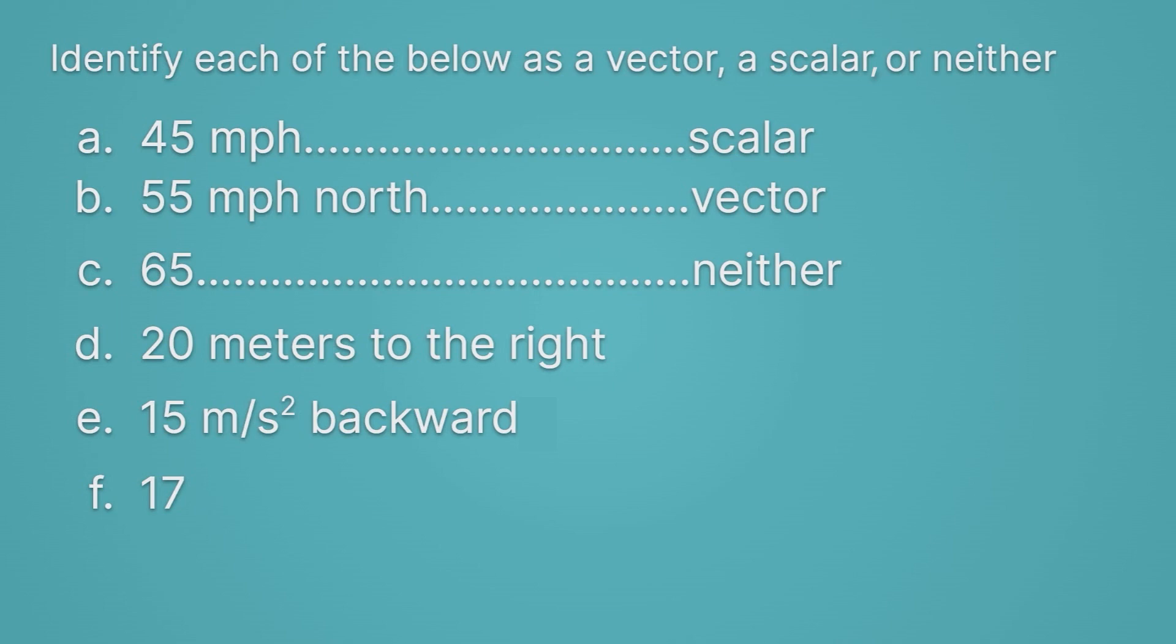Okay, next up we have 20 meters to the right. Notice it has a size, 20. It has a unit, meters, and a direction to the right. So that makes it a vector.